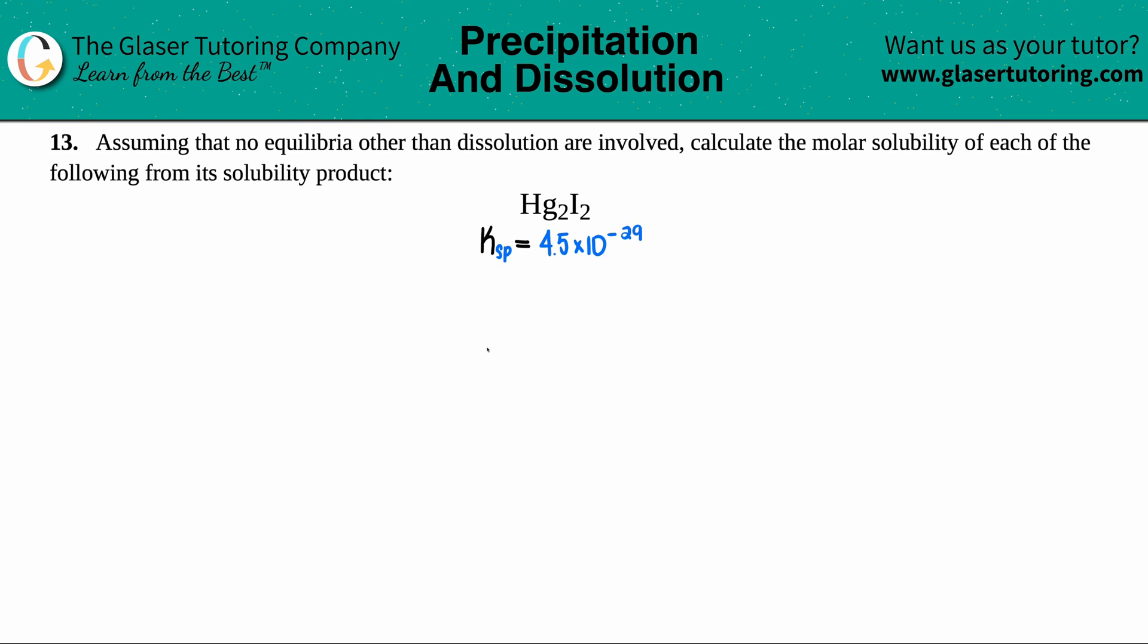Number 13, assuming that no equilibria other than dissolution are involved, calculate the molar solubility of each of the following from its solubility product.